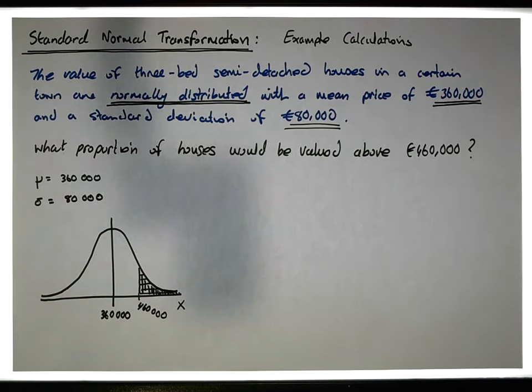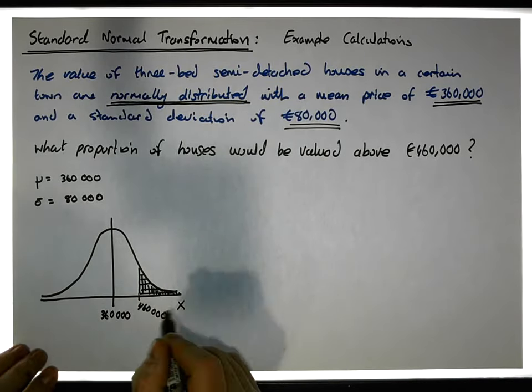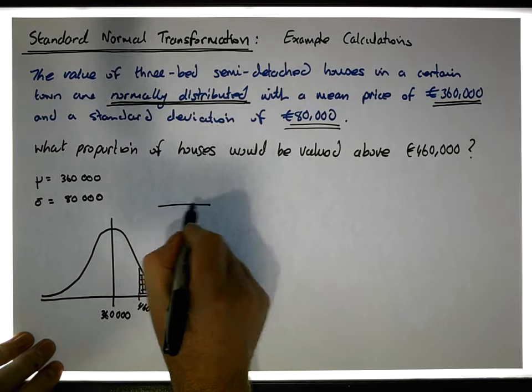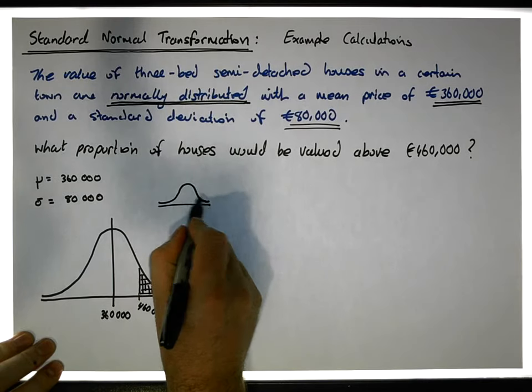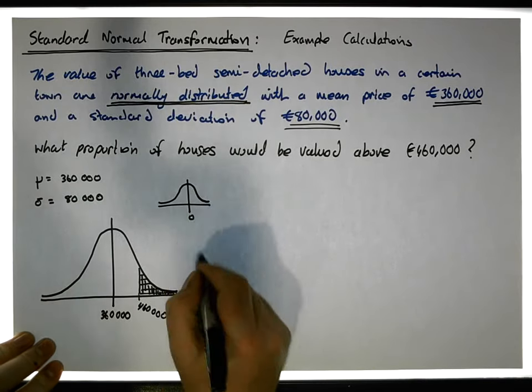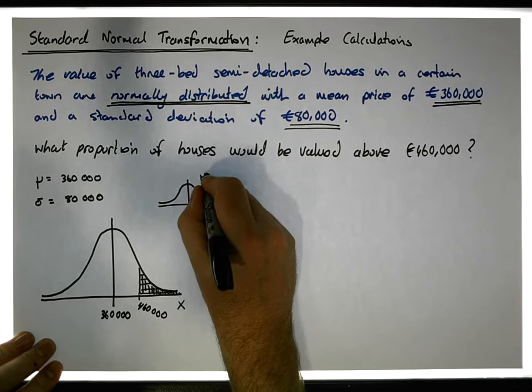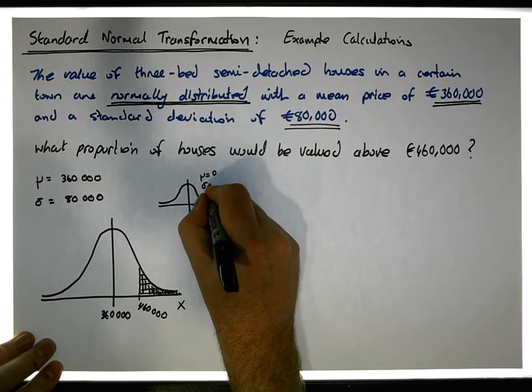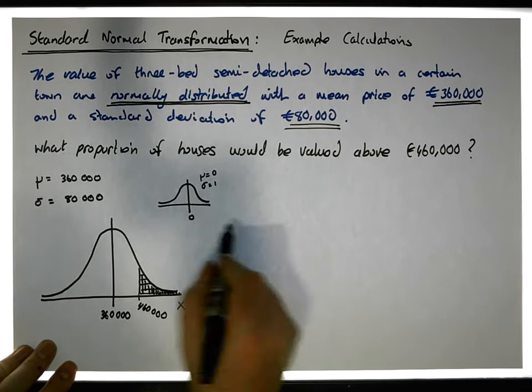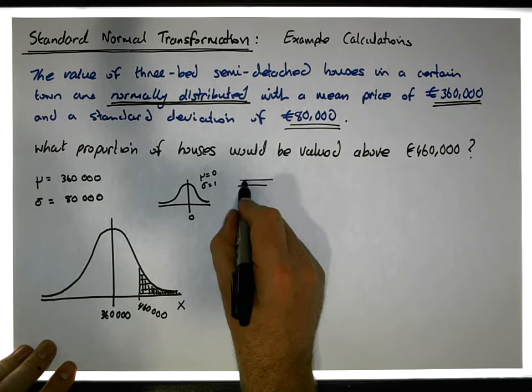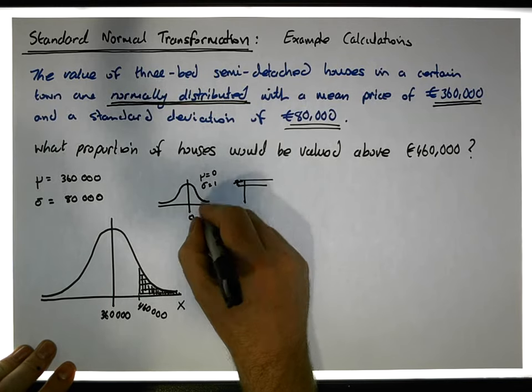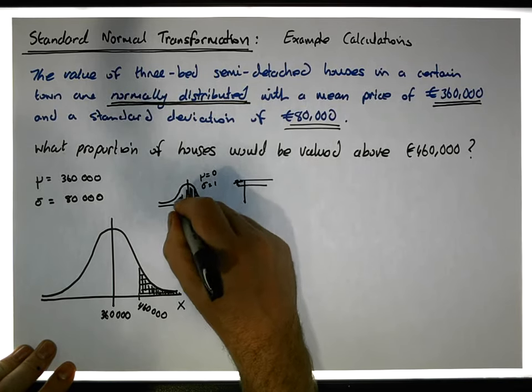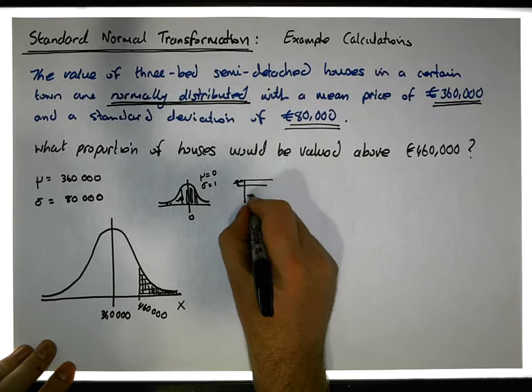So what should we do? We have another curve which is a standard normal curve. A standard normal curve is centered on 0, its mean is 0, and its standard deviation equals 1. We have tables that allow us to look up areas under these curves.